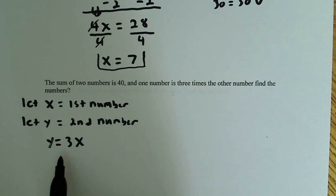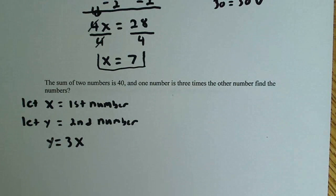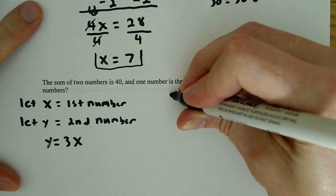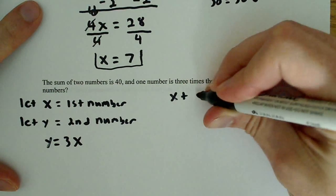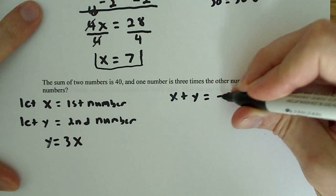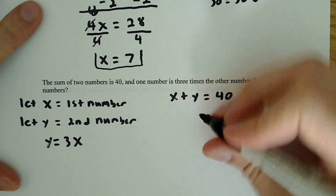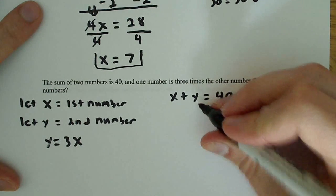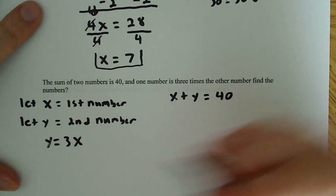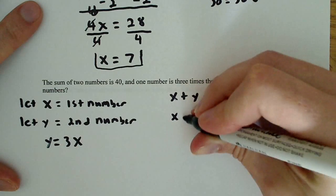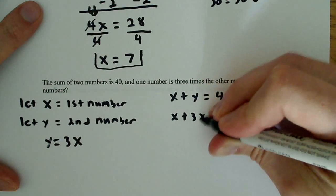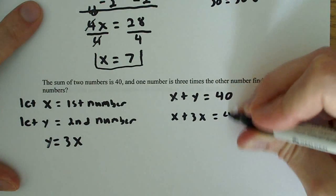Now we can actually solve this whole system here with no problem because we can say x plus y is equal to 40. But we know that y over here is also equal to 3x, so what we can say here is that x plus 3x is equal to 40.